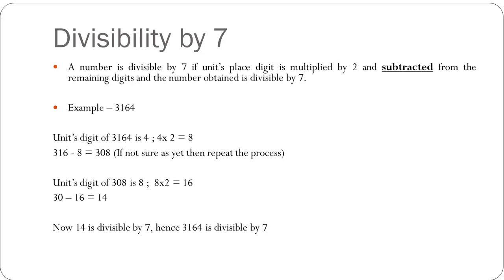Let us take an example of the number 3164. The units digit of 3164 is 4. You multiply this units digit by 2 and you get 8. Then you subtract this 8 from the remaining digits, which is 316. So 316 minus 8 gives me 308. Now some of you might know that 44 times 7 is 308, and hence you can say that 3164 is divisible by 7.